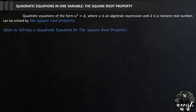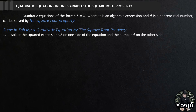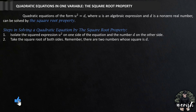Steps in solving a quadratic equation by the square root property. Number one: isolate the squared expression u squared on one side of the equation and the number d on the other side. Step two: take the square root of both sides.